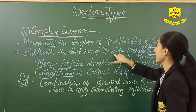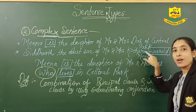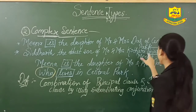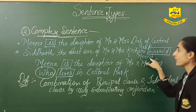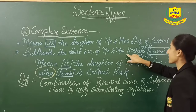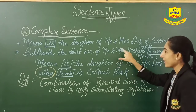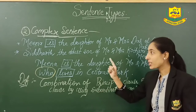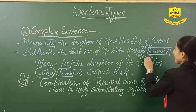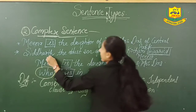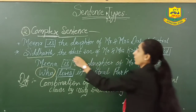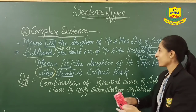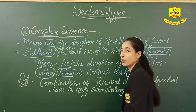Now for the second example: Siddharth, the eldest son of Mr. and Mrs. Kothari, married Meena. We will split this into two parts. Siddharth married Meena — that is the main clause. Then: who is the eldest son of Mr. and Mrs. Kothari — if I write this alone, we will not fully understand it because it has to be dependent on the main clause or the principal clause. So like this you can understand what a complex sentence is. Let's go to the third type of sentence, which is compound sentence.